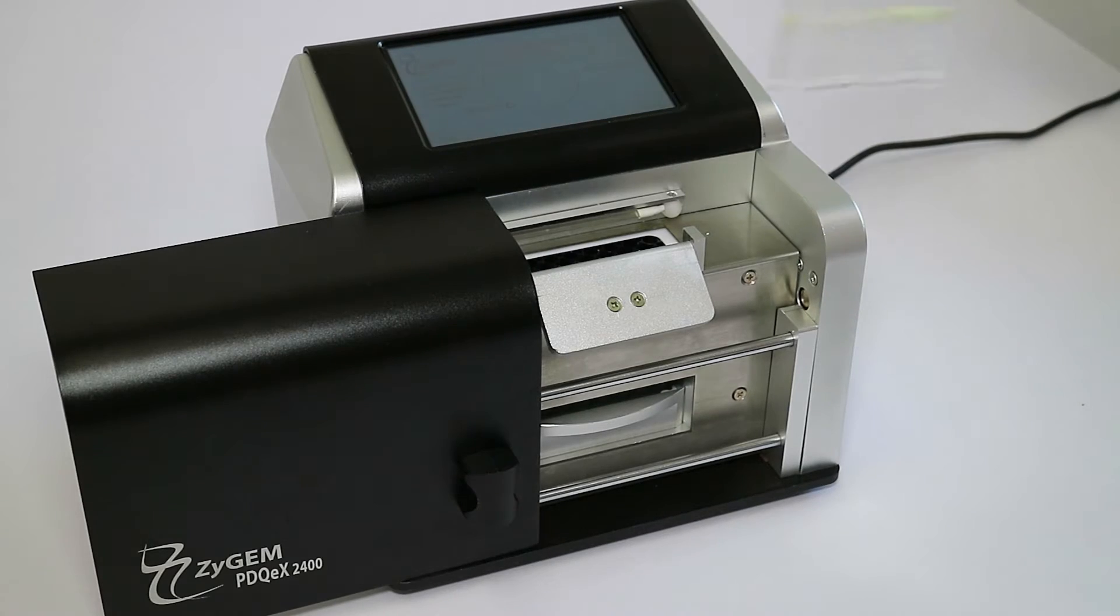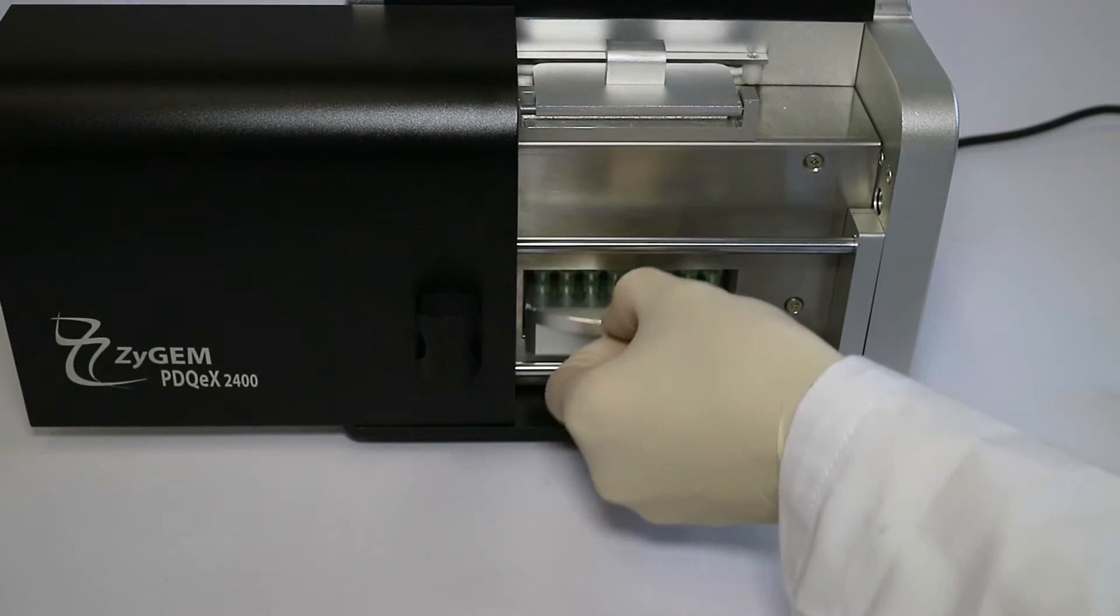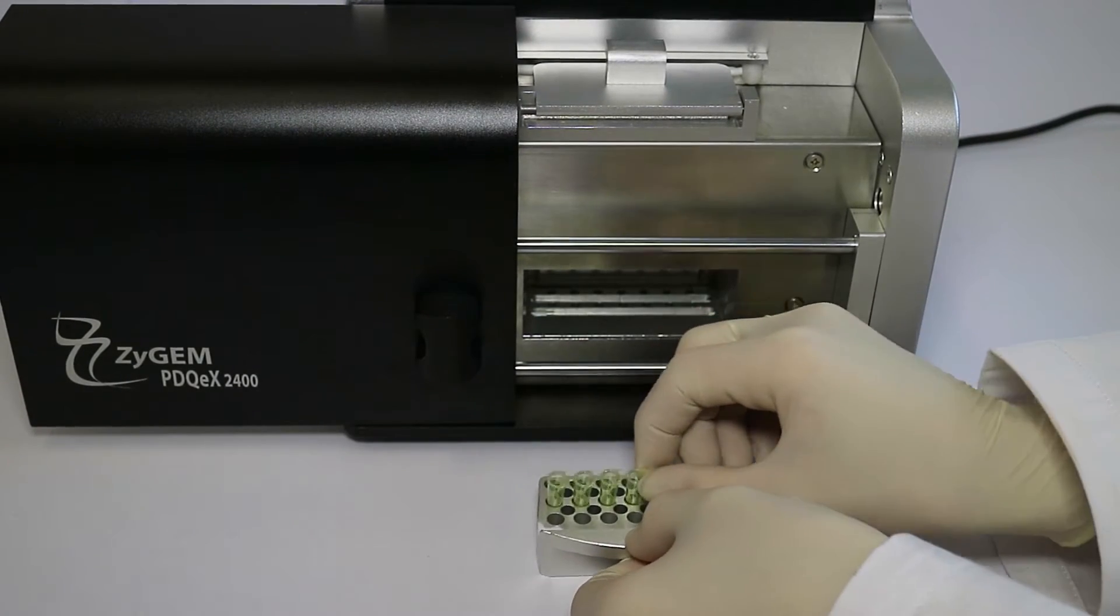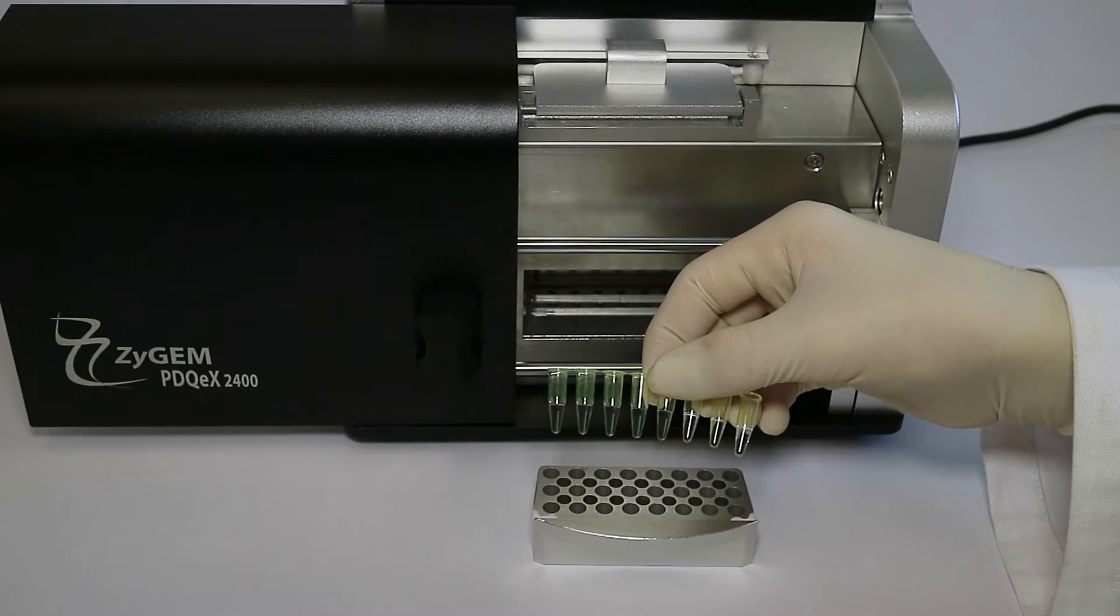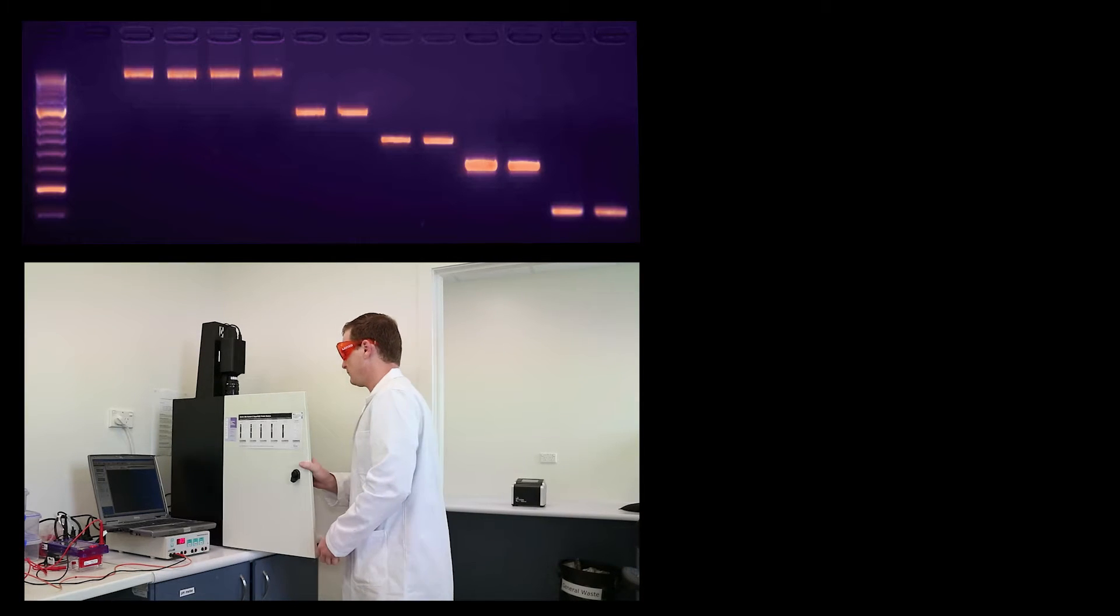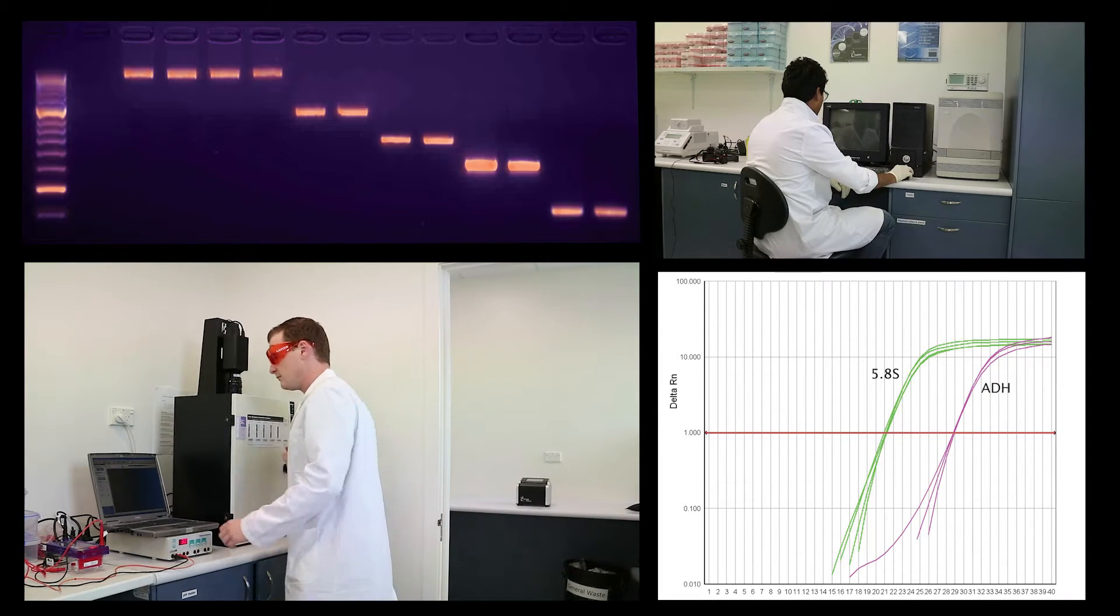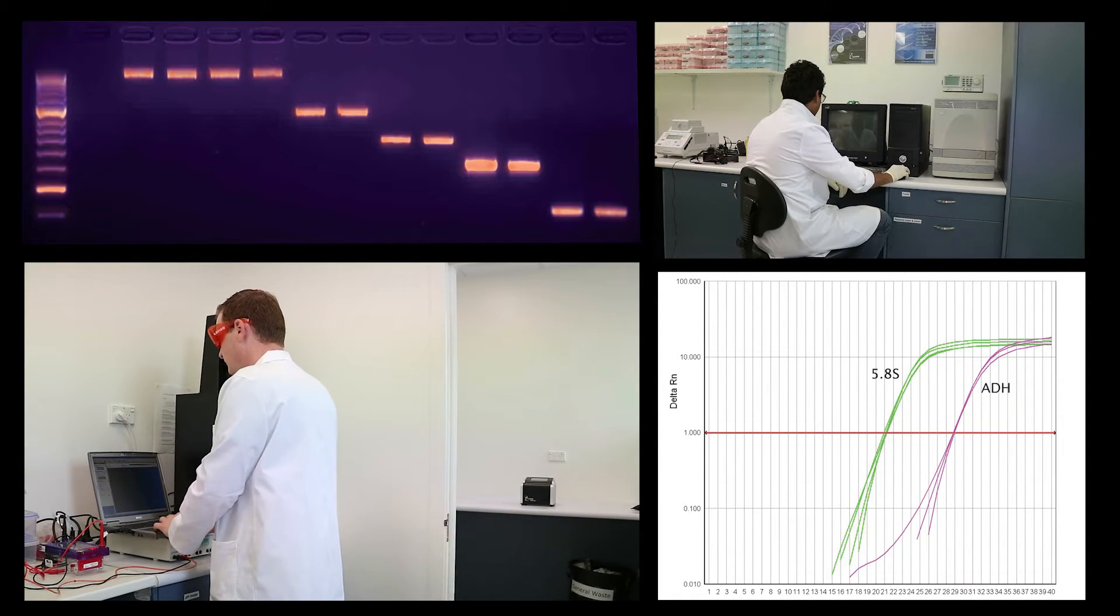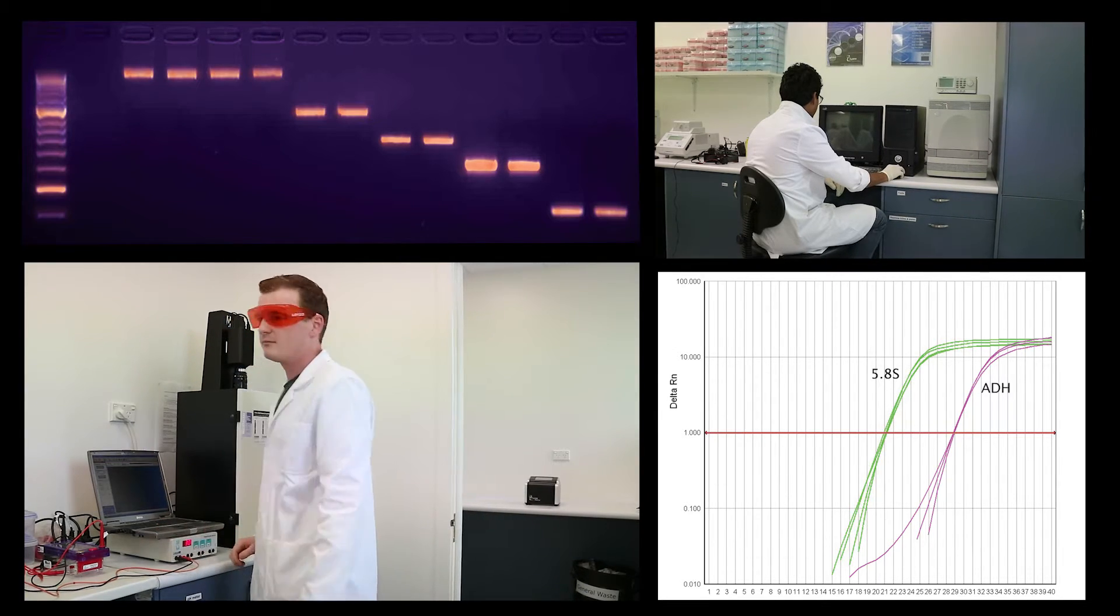These are now ready for processing by PCR or qPCR. You will have 100 microliters of extract and usually 1 to 5 microliters is enough for a good result. The extracts produced by the Phytogem system are compatible with most downstream applications.